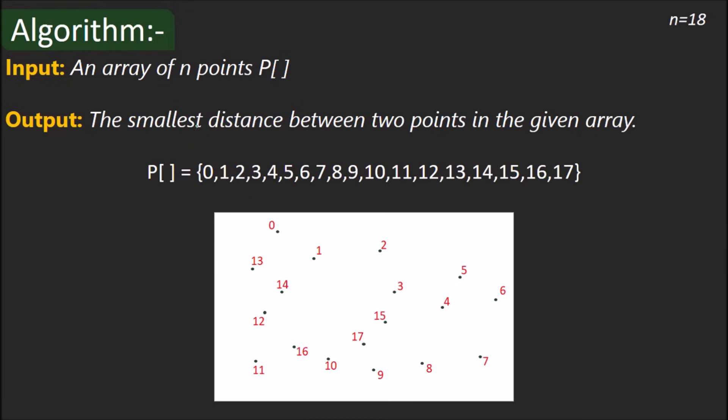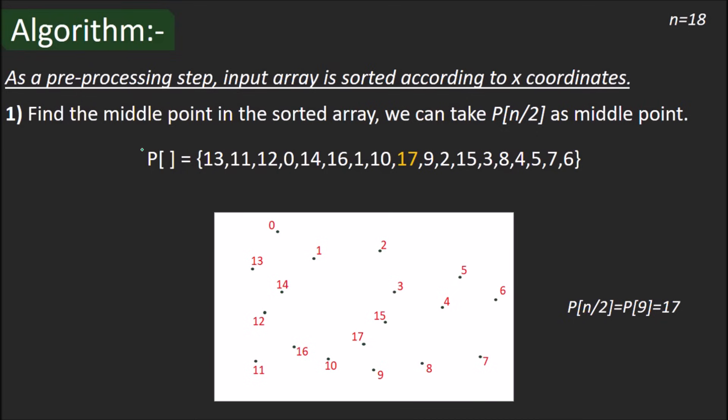Let's have a look at the algorithm. As an input, we have an array of n points. The output will be the smallest distance between two points in the given array. Let's consider this example which has 18 points 0 to 17. First of all, we need to sort all the points in the array by their x coordinate.